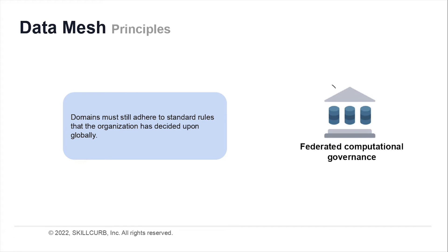The final data mesh principle aims to support all three principles discussed above by letting each domain exercise governance over the data products that they build locally. However, domains must still adhere to the standard rules that the organization has decided upon globally. This is important, particularly with a decentralized approach, to run the ecosystem in harmony and achieve data interoperability. Ultimately, this model aims to have a strong collaboration between the local domain and the global governance team to cater to all the data needs.